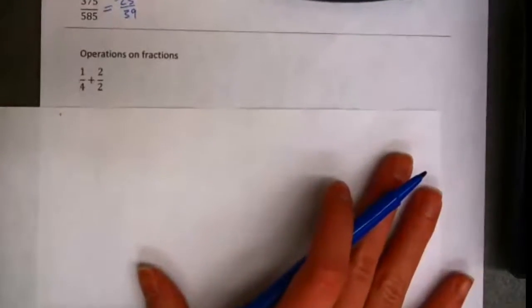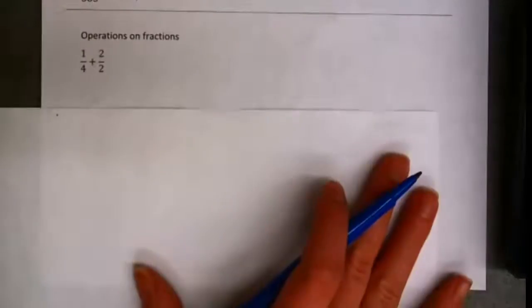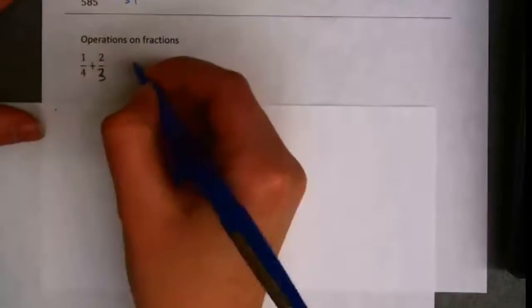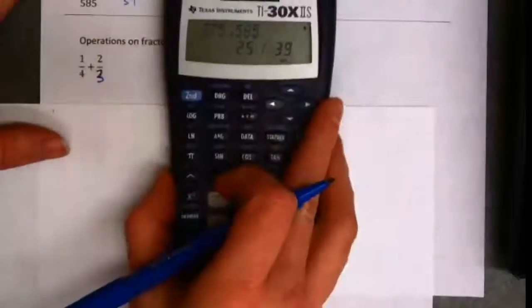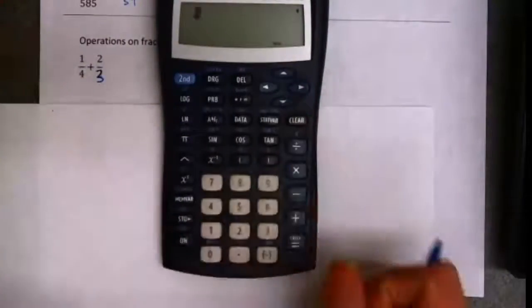Okay, probably the scariest thing for students to do with fractions is operations on fractions. Oh, and actually that example doesn't make sense. I have a little typo there. Let's do 1 4th plus 2 3rds.